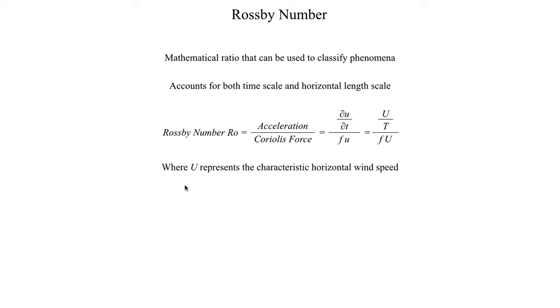Just to reiterate, this capital U represents the characteristic horizontal wind speed, and you'll notice that this du on top gets replaced with a U, and also the u in this Coriolis force denominator gets replaced with a capital U. Then T represents the characteristic timescale, and the other symbol we'll introduce is capital L, which represents the horizontal length scale. We'll actually factor that into the equation here. Right now there's no L, but we'll show where the L comes from a little bit later.